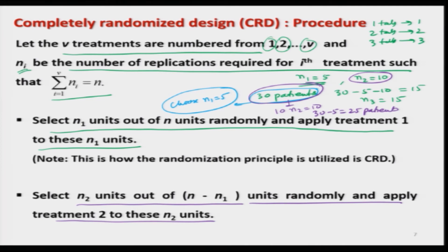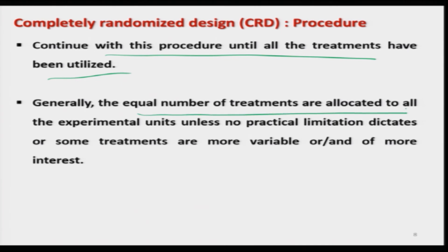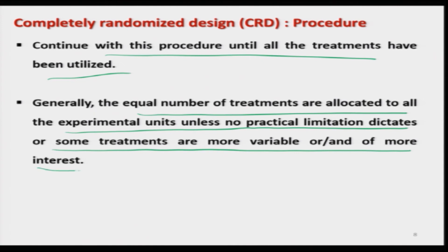We continue this procedure until all treatments have been utilized, making sure the total number of treatments and total number of patients are the same — meaning all treatments are given to all patients. In practice, equal numbers of replications are often allocated to all experimental units unless practical limitations dictate otherwise, or some treatments are more variable or of more interest. That is the basic procedure of the completely randomized design.